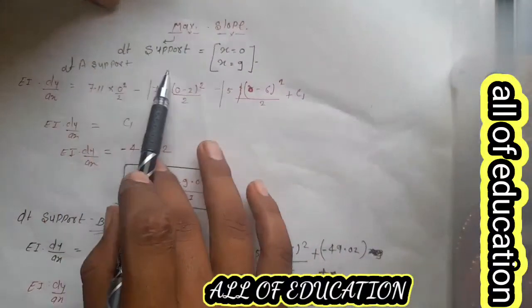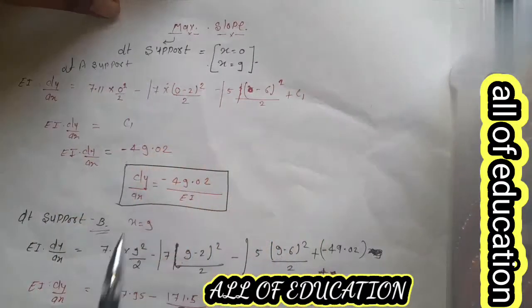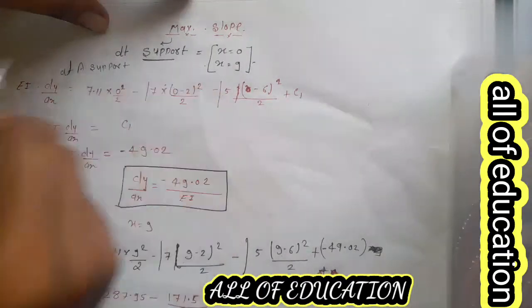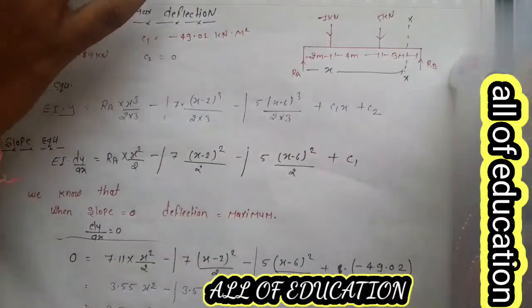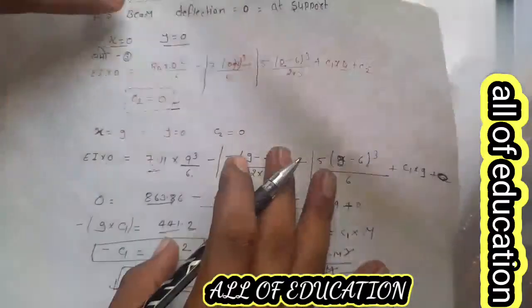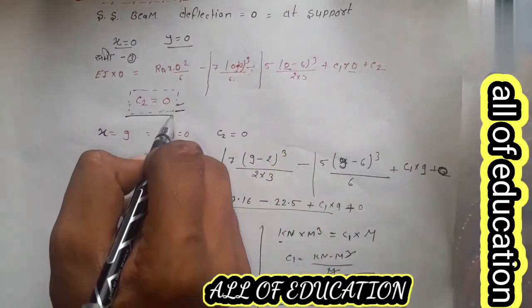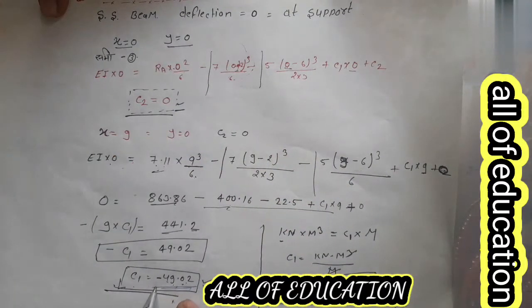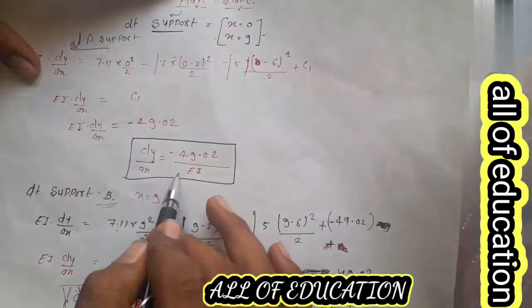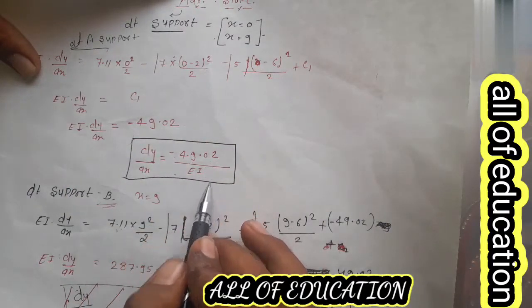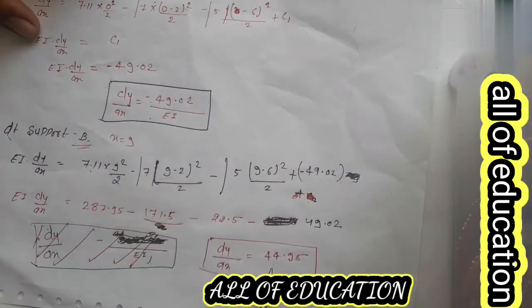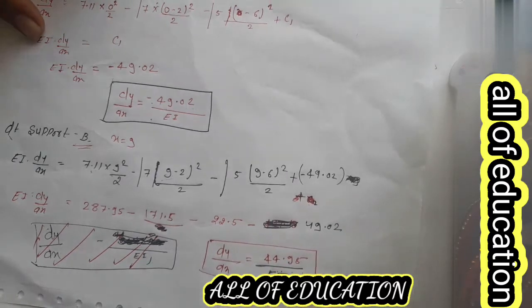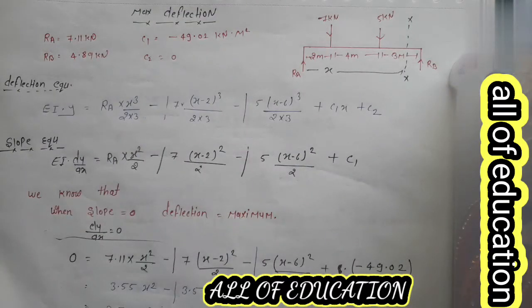हम जानते हैं कि simply supported beam में support पर deflection 0 होता है। उसकी सायता से हमने C1 और C2 की value निकाली थी। C2 की value निकल के आई 0 और C1 की value निकल के आई minus 49.02। Maximum slope: support A पर minus 49.02/EI और support B पर 44.95/EI।